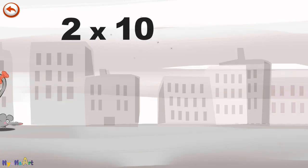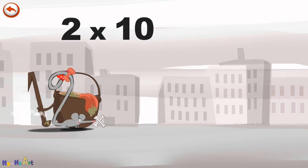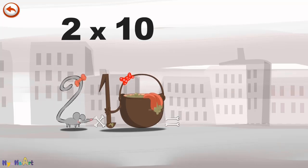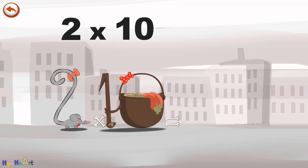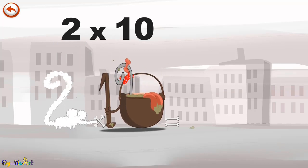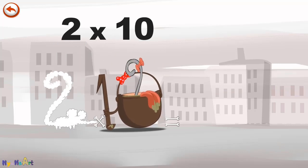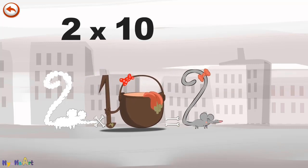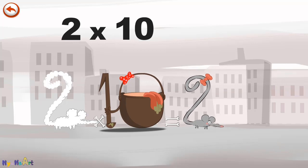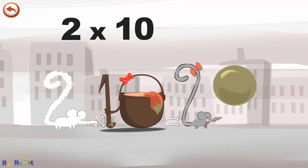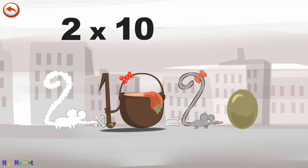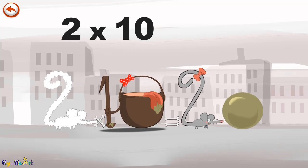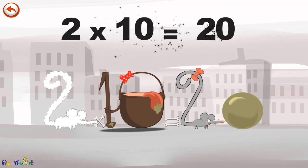What's the story of 2 times 10? When Two Squeaks meets the potion Magi 10, it makes her very, very hungry. She dives head first into the cauldron and comes out feeling very full. She gives an enormous magic burp and blows a bubble in the shape of a zero. 2 times 10 is 20.